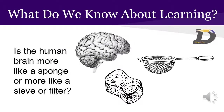Please stick with me here as I take a little detour. If we're going to address learning environments, I think it's important to talk about what we mean by learning. I ask the question: is the human brain more like a sponge or more like a sieve or filter? The answer is that our brains are more like a sieve than a sponge. We like to think that little kids soak everything up, but by and large, we don't remember every experience we've ever had.